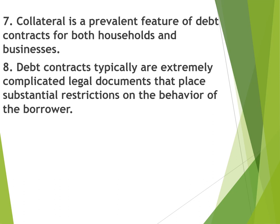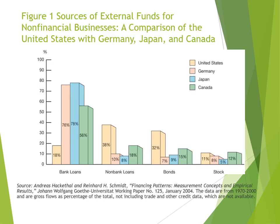So those are the eight basic facts about financial structure. Now let's look at a chart comparing data from the US, Japan, Germany, and Canada, showing bank loans, non-bank loans, bonds, and stock percentages for each country.